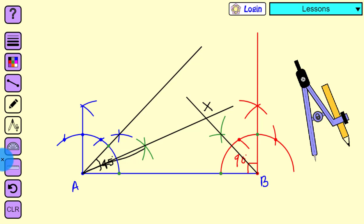Here, XA and XB are bisectors of the 45-degree and 90-degree angles respectively. Let us call the intersection point X.